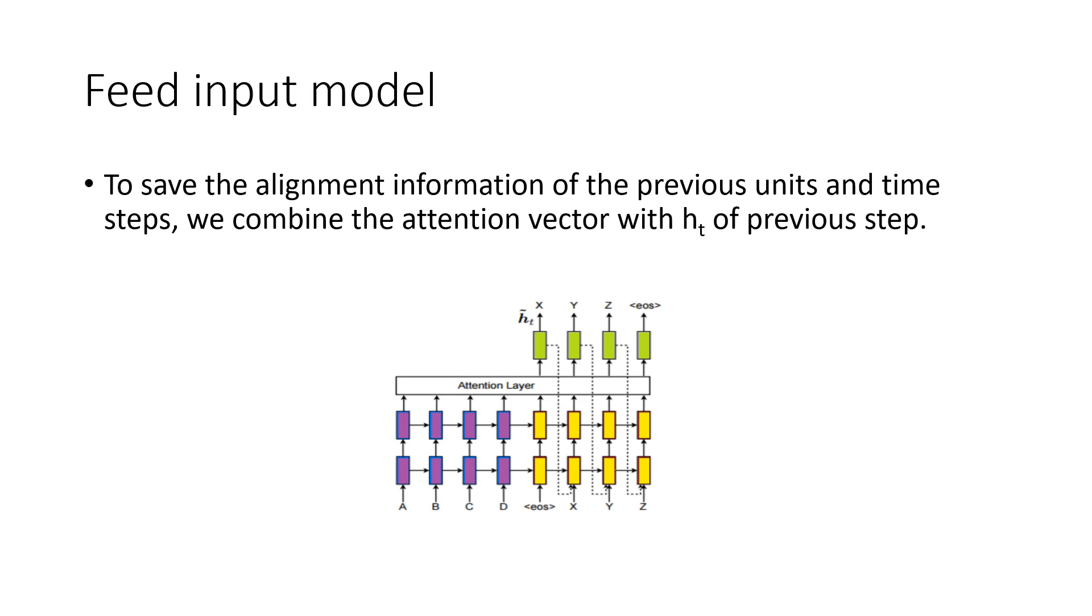We have a feed input model where we can see that to save the alignment information of the previous units and time steps, we combine the attention vector with the hidden state unit of the previous step so that when we move up in the time step, we have the previous alignment information also.